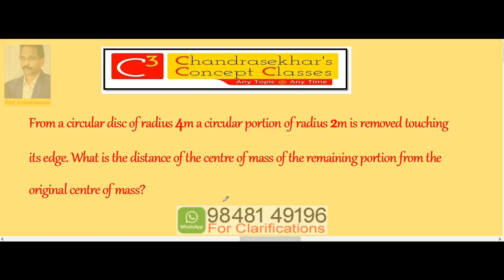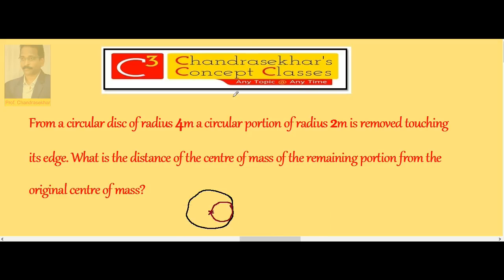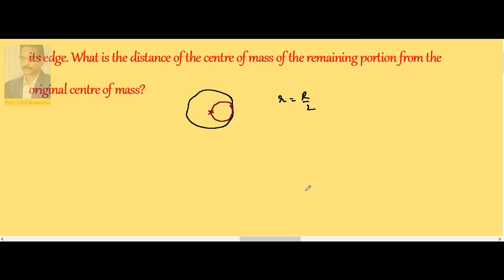Here a circular disk is taken, and another circular portion is removed like this. This is the case of small r equal to capital R by 2, and touching one end. Therefore the shift is given by small m by (capital M minus small m) into D.